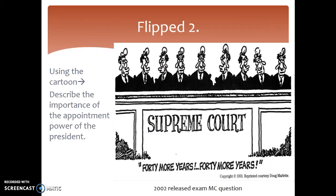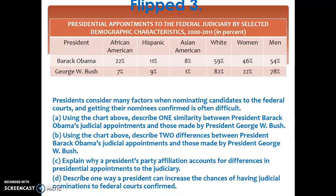The second assignment is to analyze a political cartoon from a 2002 AP test and describe the importance of presidential power based on the Supreme Court cartoon. The third assignment is to analyze a chart and plan an FRQ — just bullet points, not full sentences — about how you would answer the questions. This will probably show up on your test.